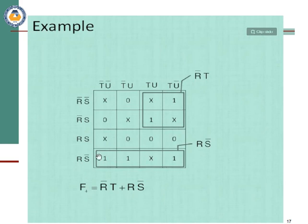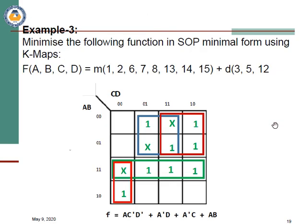To maximize grouping, we consider don't care conditions as one and combine them to form a larger group. This is the purpose of don't care conditions — they help maximize our grouping. If I had not considered X as one, there would be two small groups of two ones each. But by considering X as one, one large group is formed — that is the benefit of don't care.